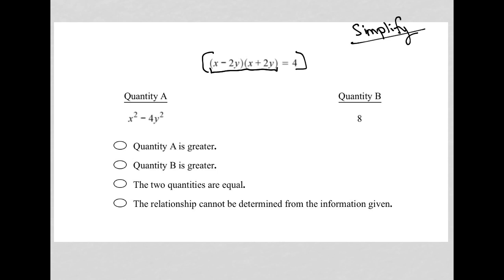So these binomials, the product of these binomials, I can solve by using FOIL. Using FOIL, I have first times first, which is x squared,